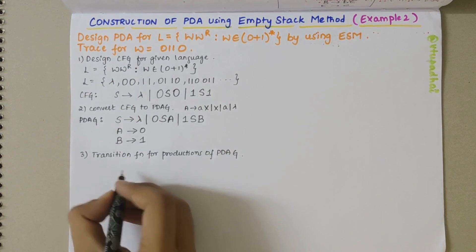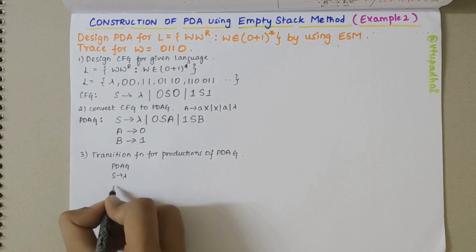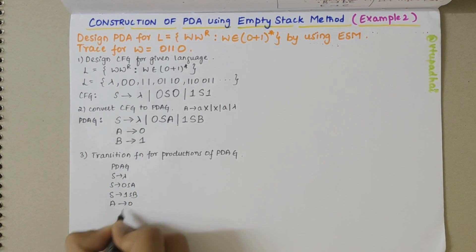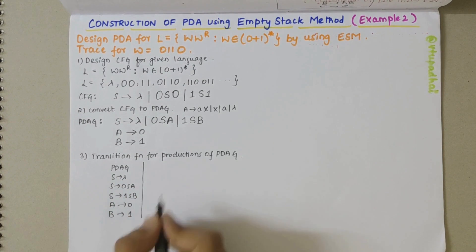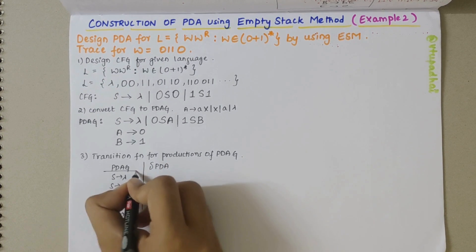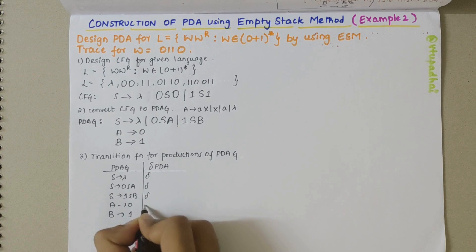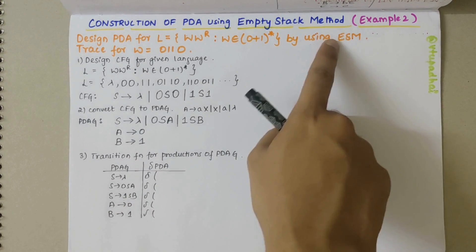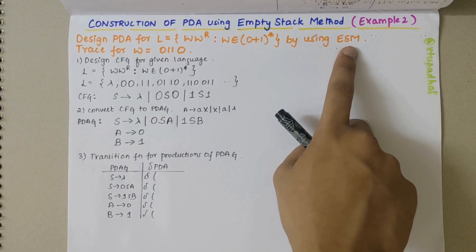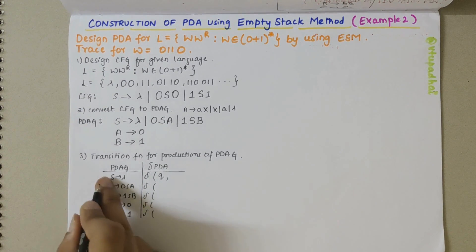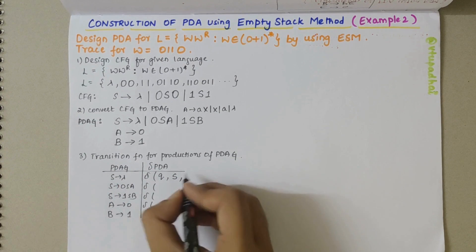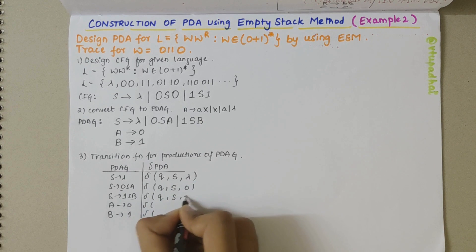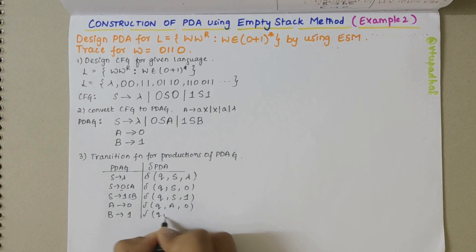Let me write the transition functions one by one for the PDAG productions: S derives lambda, S derives 0·S·A, S derives 1·S·B, A derives 0, and B derives 1. The transition function delta(Q, lambda, S) gives Q·lambda; delta(Q, 0, S) gives Q·S·A; delta(Q, 1, S) gives Q·S·B; delta(Q, 0, A) gives Q·lambda; delta(Q, 1, B) gives Q·lambda.